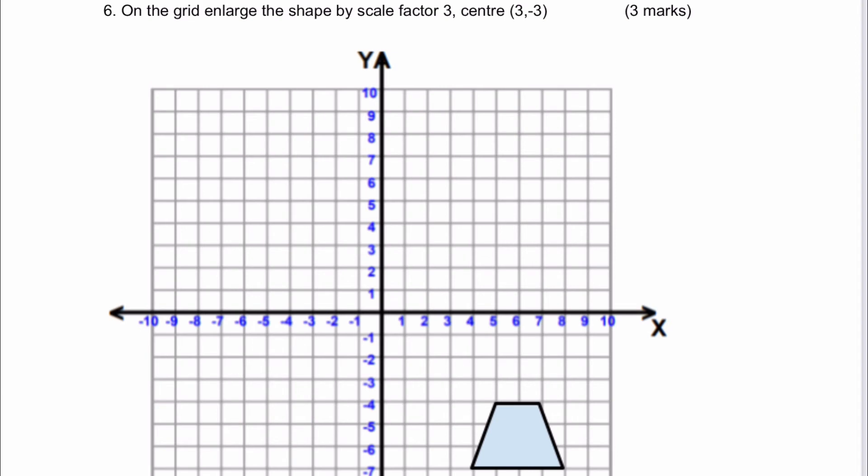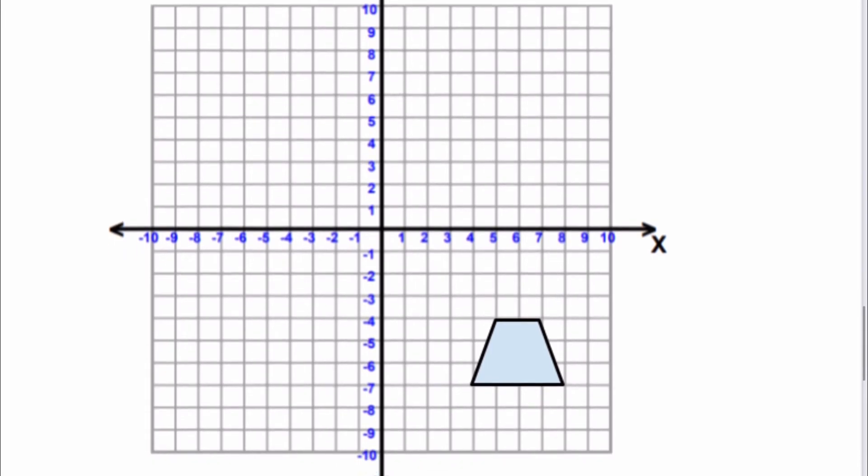On to question number six. On the grid, enlarge the shape by scale factor three, center three minus three. This might be a little bit tricky to show on the screen. The way we're looking at doing this is we've got a center of three minus three, which is actually going to be this point here. Then effectively I'm going to look at how far, say, point A has moved in order to be enlarged by a scale factor of three.